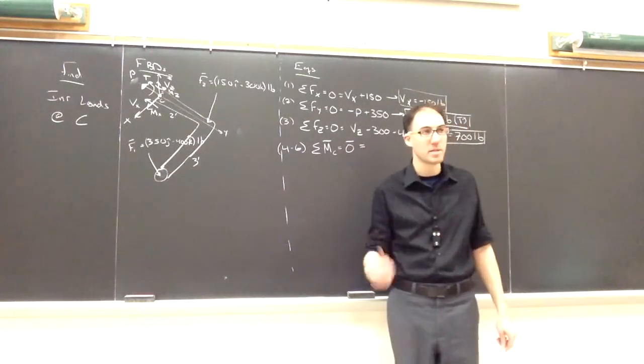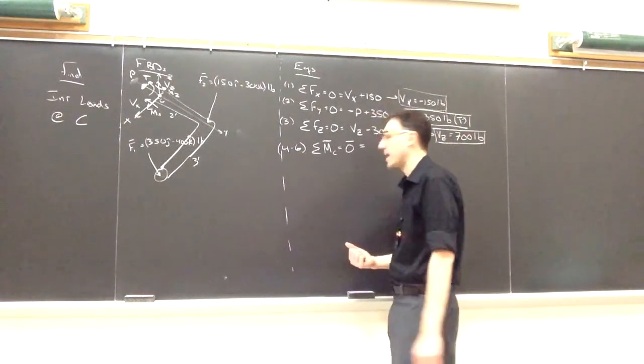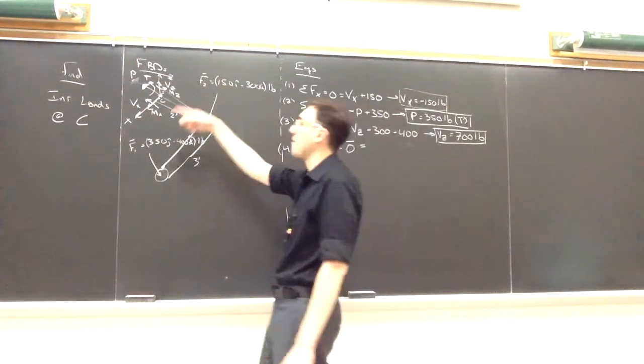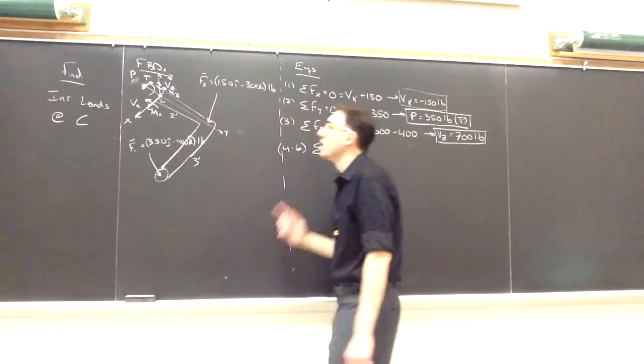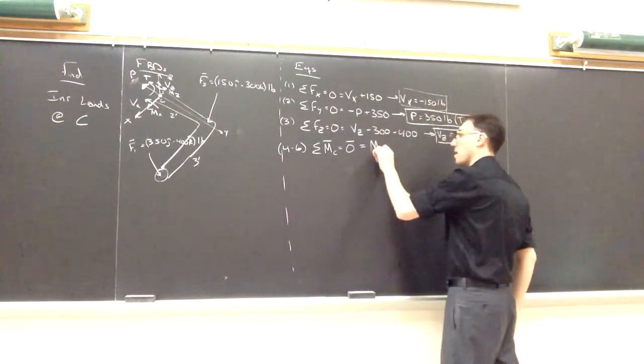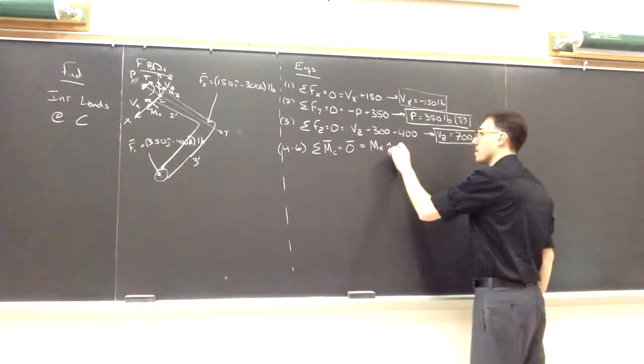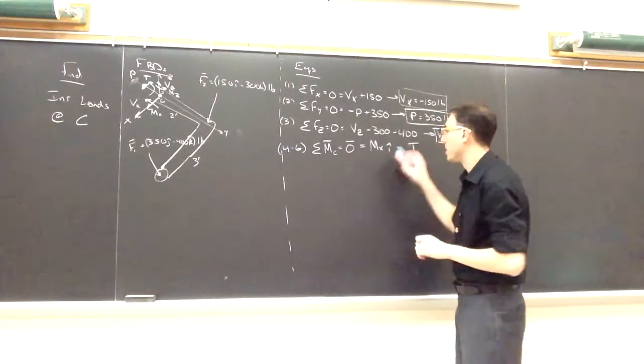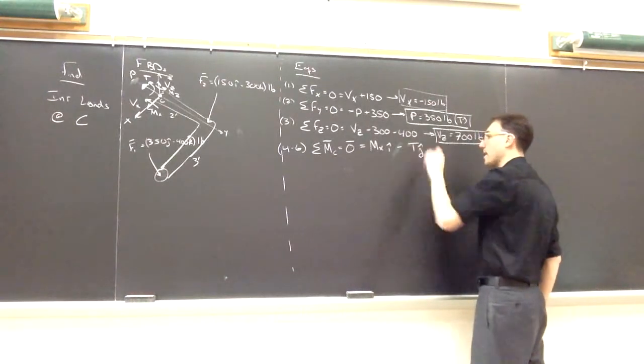So what causes a moment around point C? Well, couples cause moments, and forces that act somewhere other than point C will potentially cause moments as well. From our free body diagram, we have three couples here, the two internal bending moments and the torsion. We have MX around the I direction. We have T, which is along the negative Y direction, or around the negative Y direction, so negative T, J.